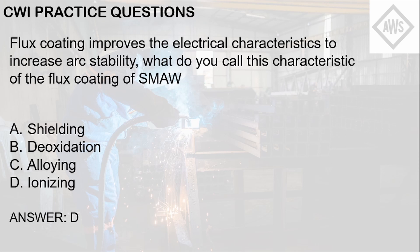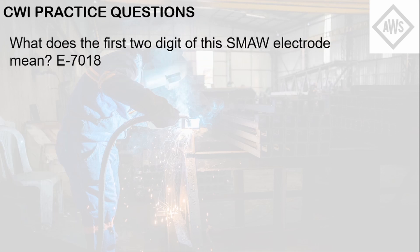Next question about welding electrodes: what does the first two digits of this SMAW electrode mean? E7018. Letter A: weld diameter of 0.7 mm. Letter B: tensile strength of 70 MPa. Letter C: tensile strength of 70 ksi. Letter D: low hydrogen electrode.